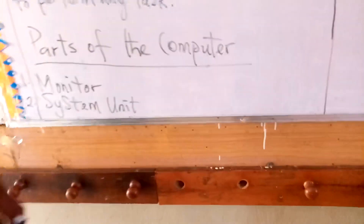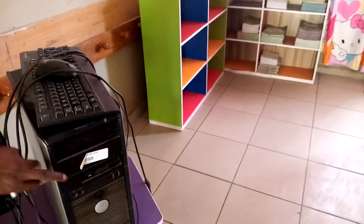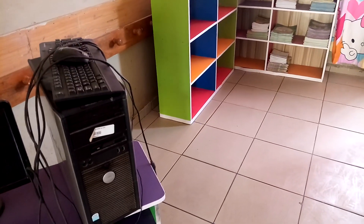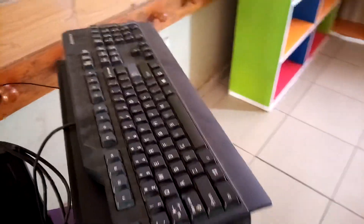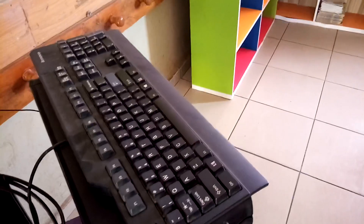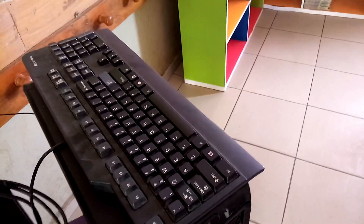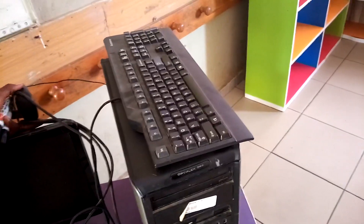The second part on the list is the system unit, which is also a basic part of the computer system. Then we also have what is called the keyboard — computer keyboard specifically, because there are other machines also called keyboard, such as the piano keyboard used in the music industry. This one in particular is a computer keyboard.